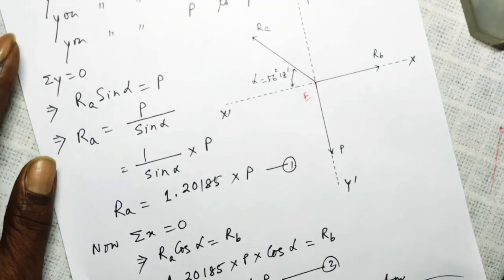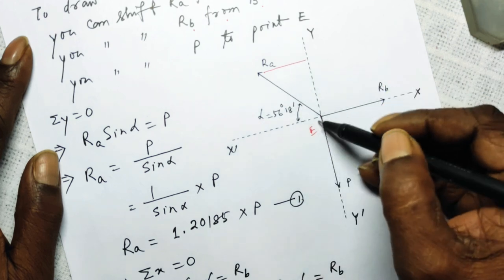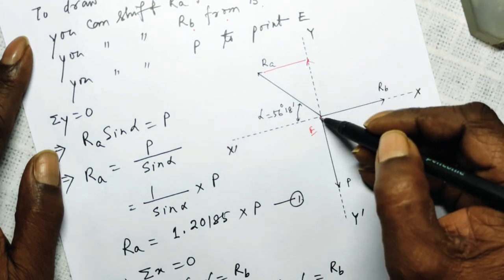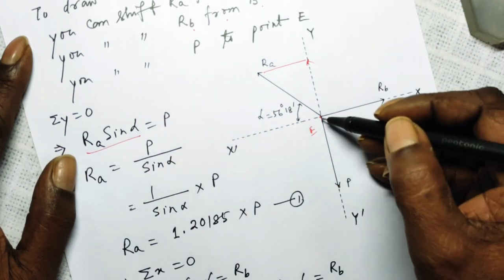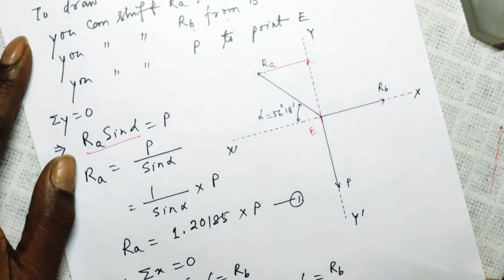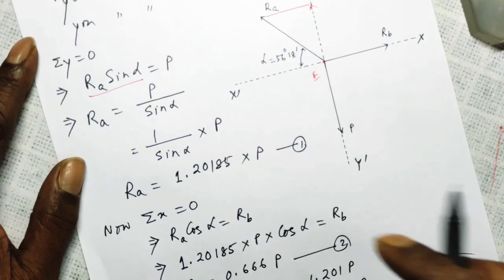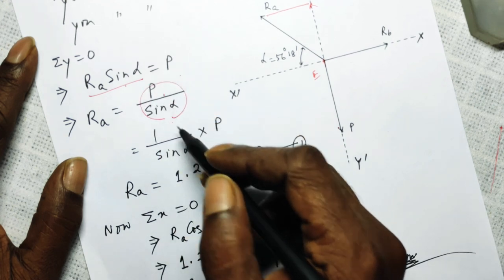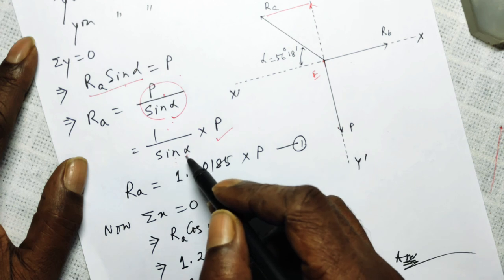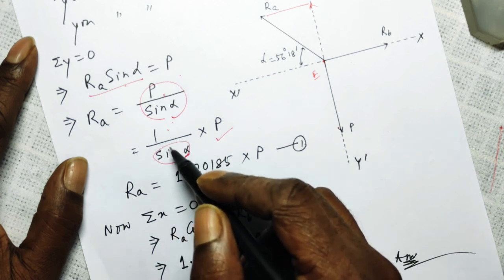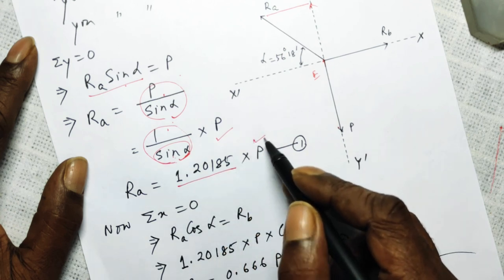Applying ΣY = 0: the component of R_A along the Y-axis is R_A times sin(alpha), and this is opposed by P. So R_A = P / sin(alpha) = (1/sin(alpha)) × P. Substituting the value of alpha, 1/sin(alpha) = 1.20185, giving R_A = 1.20185 × P.